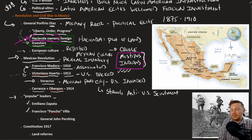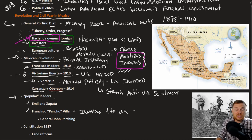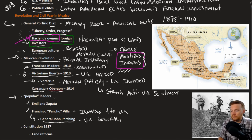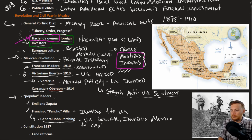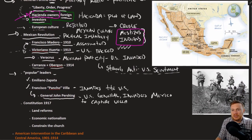Francisco Pancho Villa even invaded the United States, attacking a city in the state of New Mexico. This prompted the United States to respond: U.S. General John Pershing invaded Mexico to capture Villa — again, another example of U.S. interference.